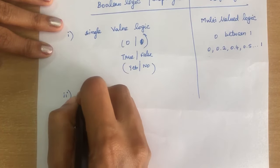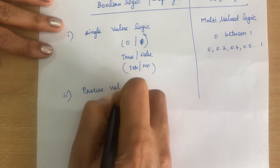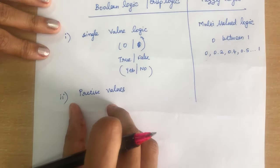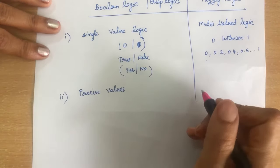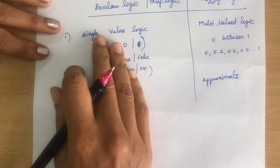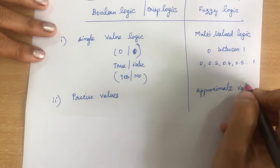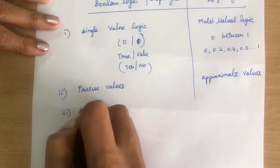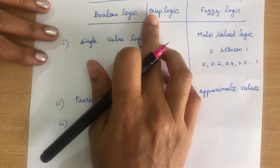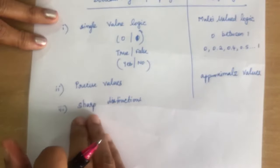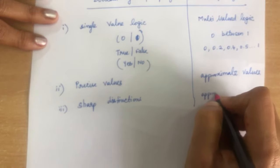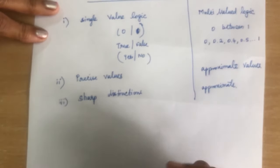The second difference: Boolean logic deals with all precise values. If the problem is precise and everything is correct, we solve it using Boolean logic. Fuzzy logic deals with approximate values — if a problem cannot be solved by Boolean logic, we use fuzzy logic. The third difference: Boolean logic uses sharp distinctions and sharp boundaries — that is why it is called crisp logic. Fuzzy logic uses approximate values and models how people think.